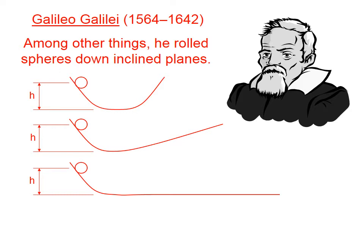Galileo did quite a bit in the 16th and 17th centuries to push forward our ideas about dynamics. He rolled spheres down inclined planes, and what he found was that the sphere tended to continue rolling until it reached the height that it started at, and then it would stop and roll back. Even if he changed the angle of the incline, the sphere would keep rolling until it reached the height it had started at, and then it would come back down.